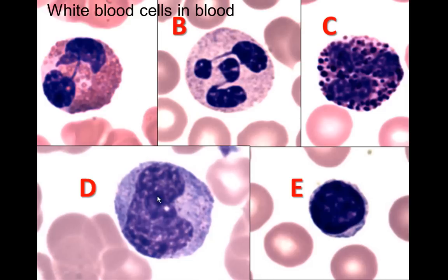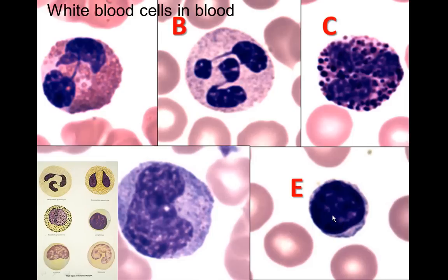The monocyte has a mostly euchromatic nucleus with a lot of cytoplasm. The lymphocyte looks mostly spherical at the light microscopic level with a small rim of cytoplasm around it. In comparison to our drawing, these are neutrophils, eosinophils, basophils, lymphocytes, and monocytes.